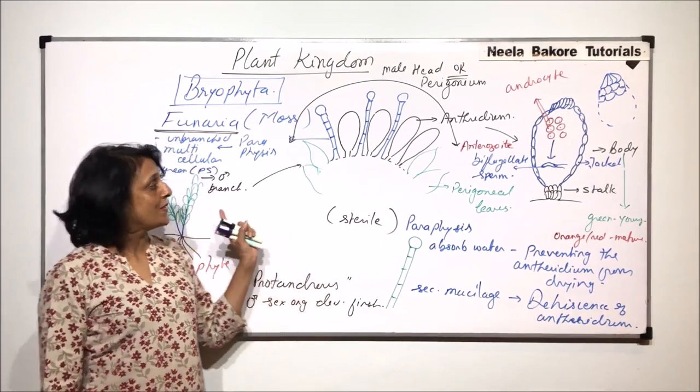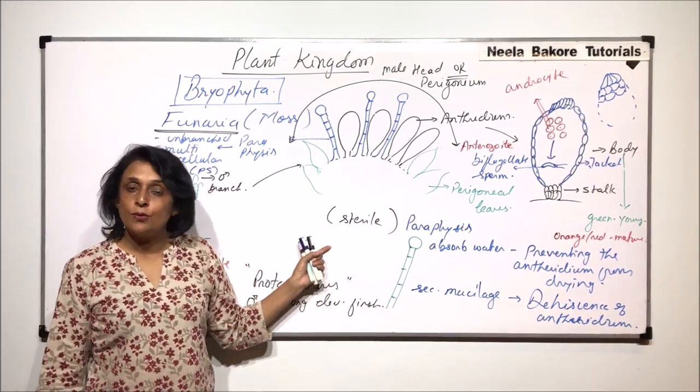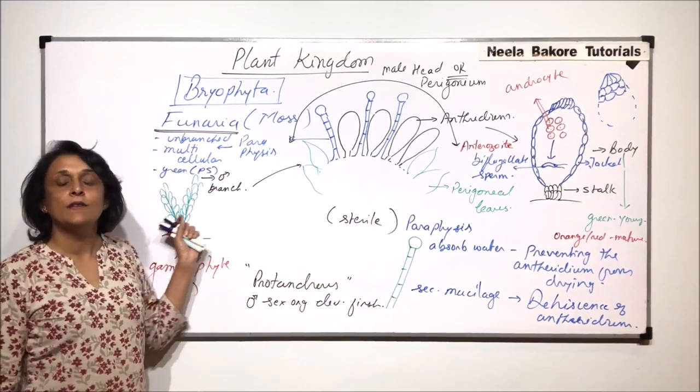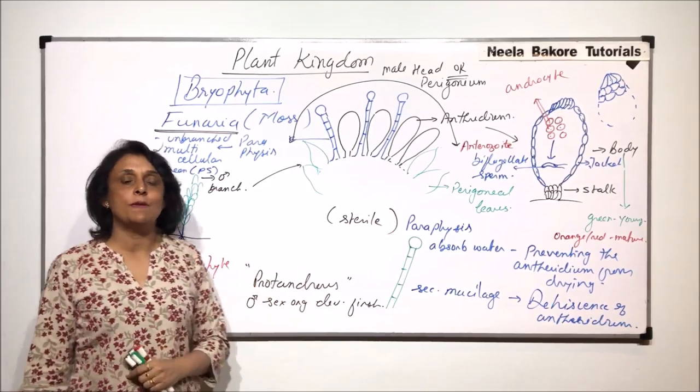Now this is the male head, and this is how the male gametes are going to get produced. In the next part, we will take up the female branch, the female sex organ, and how the female gamete is formed.